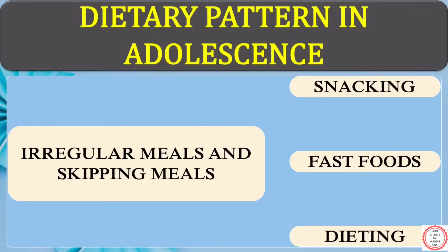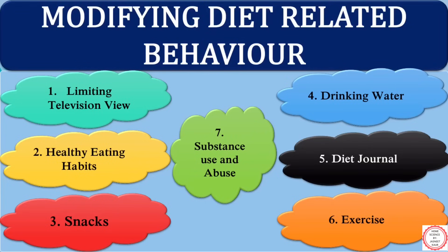Next, we have covered dietary patterns in adolescence. In this, we have covered how irregular meals and skipping meals, snacking, fast food, and dieting leave an impact on the overall health of adolescents. For more clarity, please check out the links mentioned in the description box below. The next topic we have covered is modifying diet-related behavior — how we can modify the diet-related issues amongst adolescents.